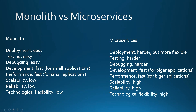Let's compare these two architectures and see where the advantages and disadvantages lie. In monolithic architecture the deployment is easy — we have only one process. In microservices, the deployment is harder because we have more services which have to be deployed.